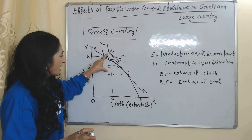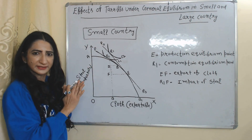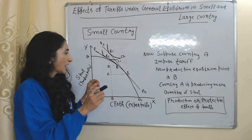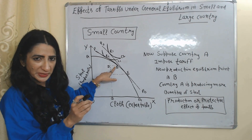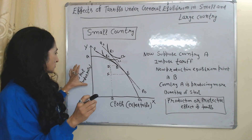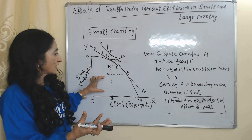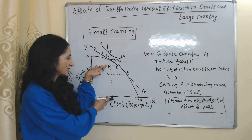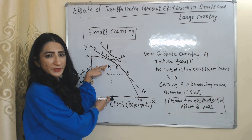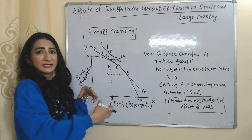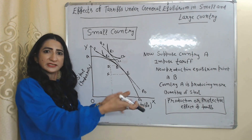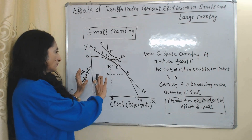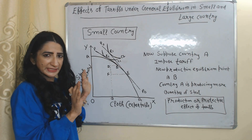Now suppose country A has imposed a tariff. After imposing tariff, the new production equilibrium point is B, and this B point shows that production of steel has increased in country A. Before imposing tariff, production of steel was equal to FQ, but after imposing tariff, production of steel has increased. This will be called the protective effect of a tariff.